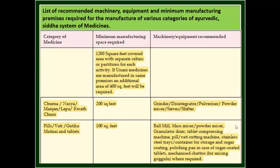Now we will see the list of recommended machines, equipment, and minimum manufacturing premises required for manufacture of various categories of Ayurvedic and Siddha system of medicine. The following table is divided into three columns: first is category of medicine, second is minimum requirement of space, and third is machinery or equipment recommended. Generally, 1200 square feet covered area with separate cabins or partitions for each activity is required. If Unani medicines are manufactured in the same premises, an additional area of 400 square feet will be required.